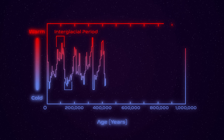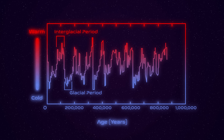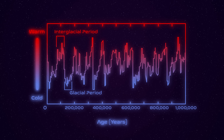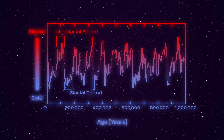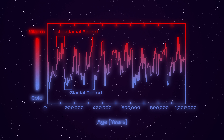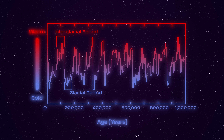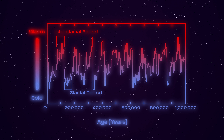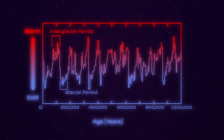We have geological records showing that in the last million years, there have been about 10 major Ice Age cycles going from ice ages to warm interglacial periods. We're in one of those now. Has the Earth ever been totally covered in ice? Yes, but a long time ago.